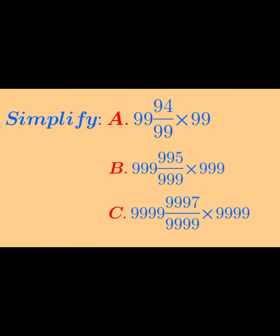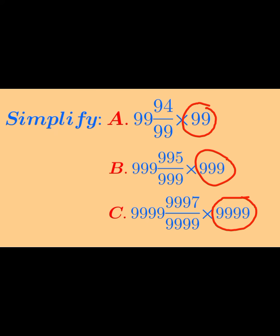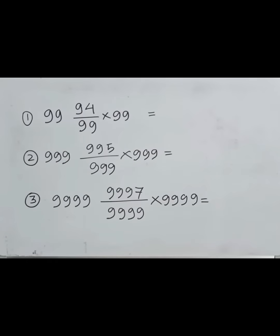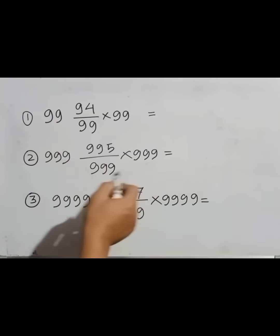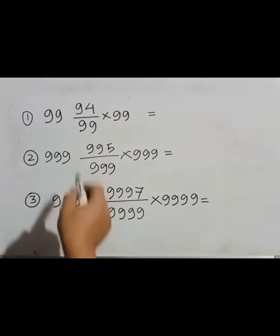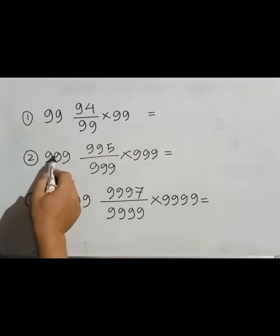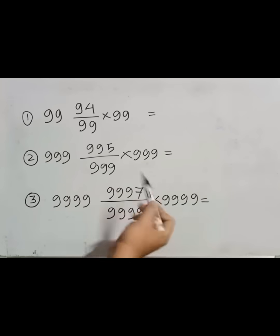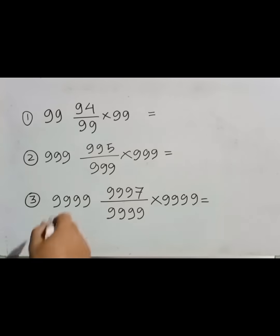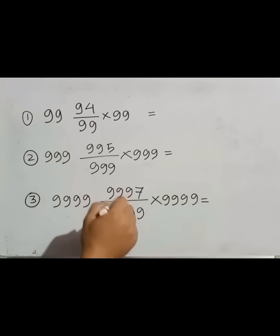Hello guys, today in this video we are going to simplify these three numbers, where the first number is a mixed fraction and the second part is a whole number. We are going to find the simplified value of these numbers using a short trick method. In each of these numbers, this is the first number, this is the second number, and this is the third number. We can see that in each number these three numbers are the same in question number two and in question number three also.